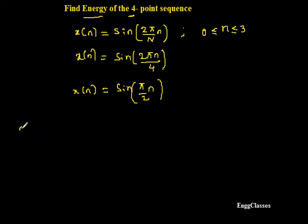If I let n = 0, I'm going to get x(0). What is that equal to? Put n = 0, I'm going to get sin 0. Sin 0 is always 0, we know that.